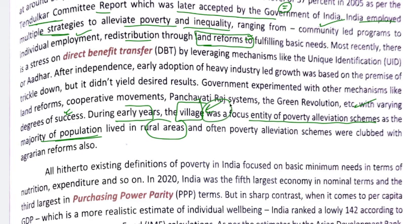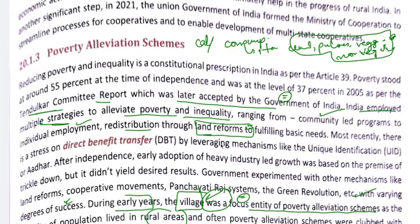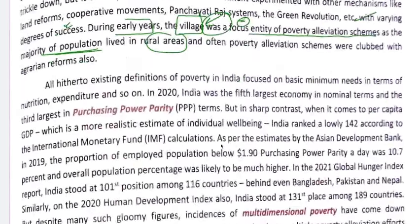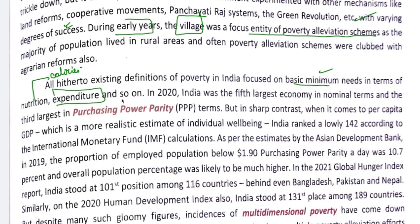The village remained the focal point of poverty elevation schemes from the very start. If you have the book, you can highlight important points; if not, use the PDF and watch my videos to build understanding and make your own short handwritten notes. Handwritten notes are always very helpful. The existing poverty definitions focus on basic minimum needs — nutrition, calories consumed, and consumption expenditure.